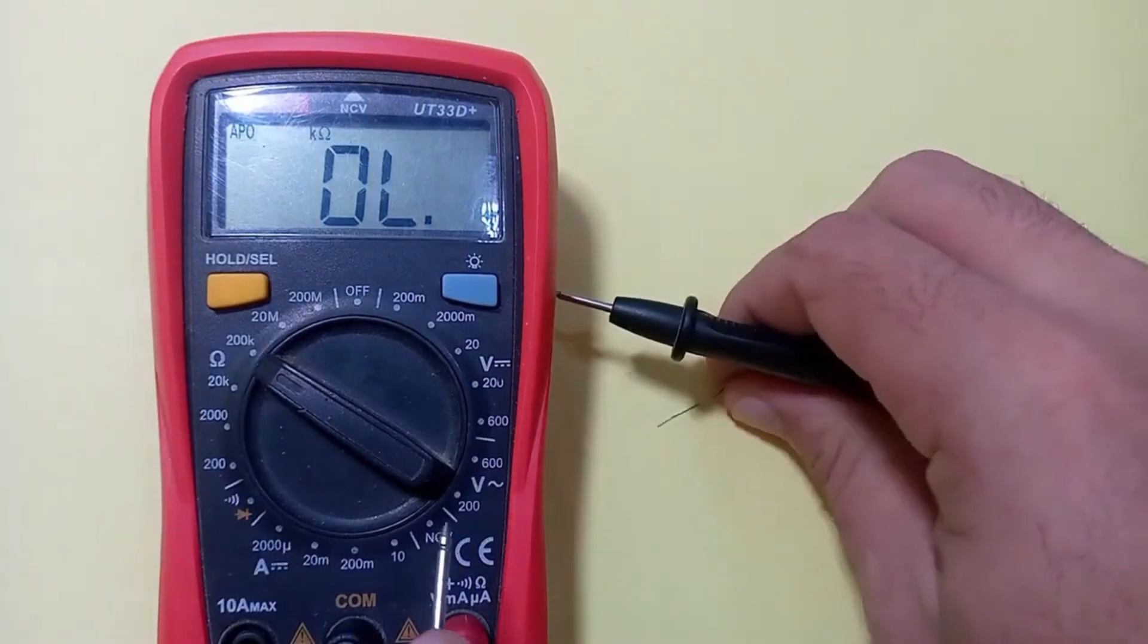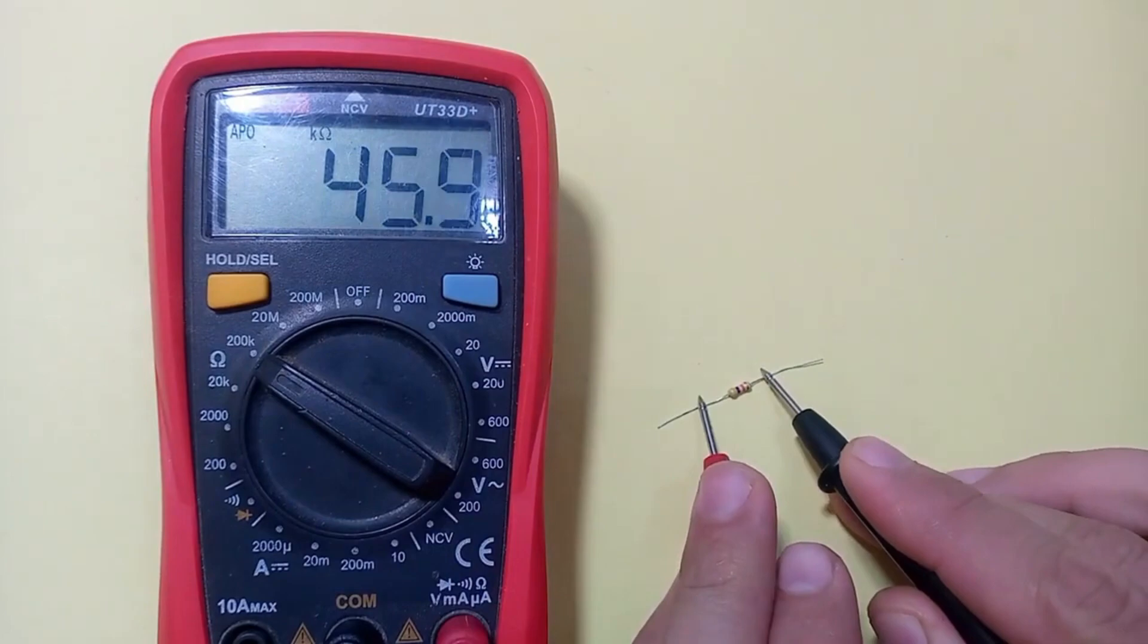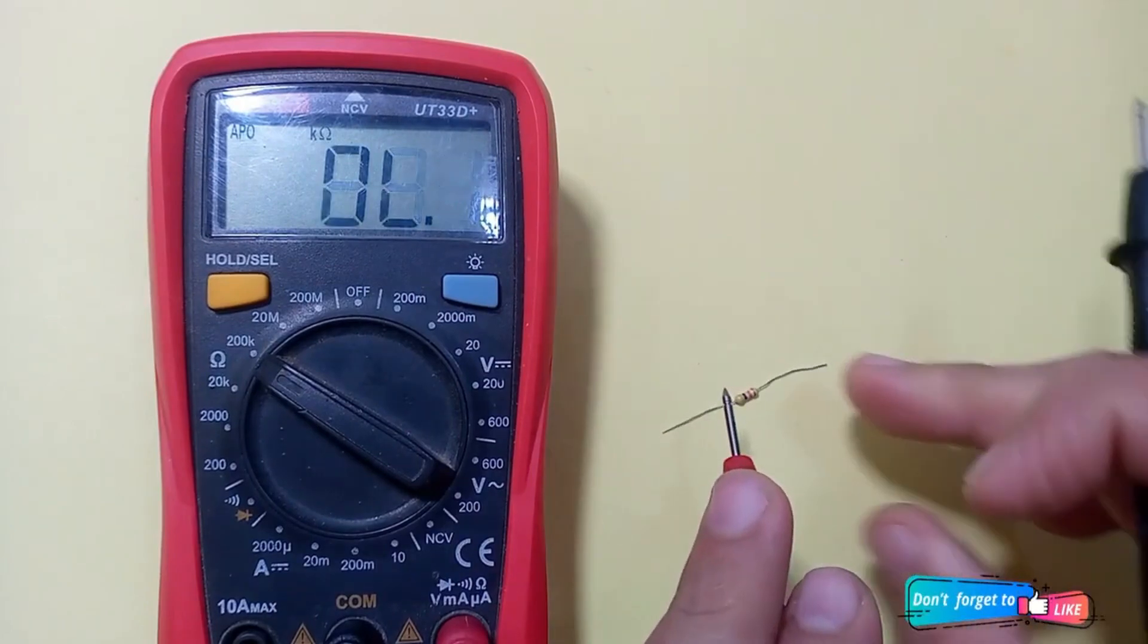To measure the resistance, connect the terminals of multimeter rigidly with resistor ends and note the reading. This is 46k ohms resistor.